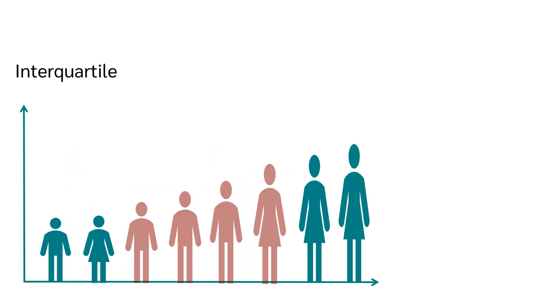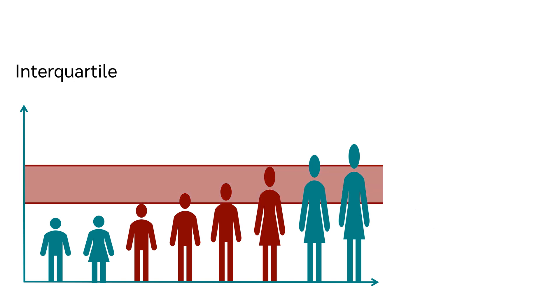Interquartile range represents the middle 50% of the data. It is the difference between the first quartile, Q1, and the third quartile, Q3.